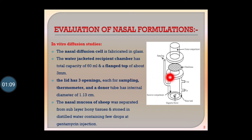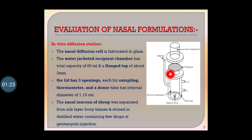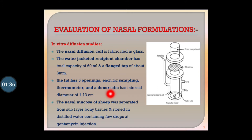The recipient chamber capacity is 60 ml and the flange top is 3 mm. The lid has three openings — each for sampling, thermometer, and a donor tube. The donor tube has an internal diameter of 1.13 cm.